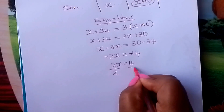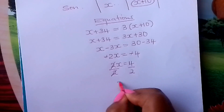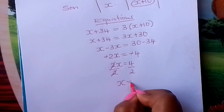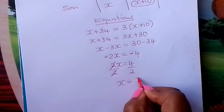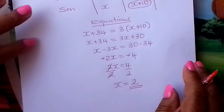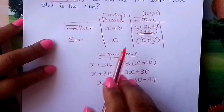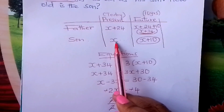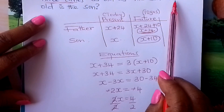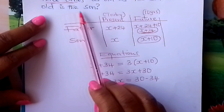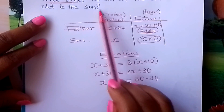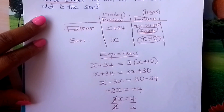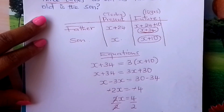Divide by 2 on both sides, learner. And therefore your X is 2. So what is this X? It is the age of the son today — and that is what the question is asking us. How old is the son? The son is 2 years old.